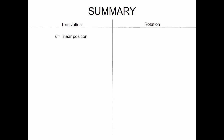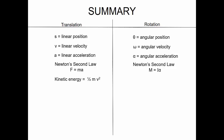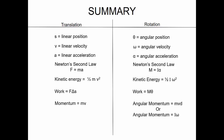In summary, for translation: S is linear position, V is linear velocity, a is linear acceleration. For rotation: theta is angular position, omega is angular velocity, alpha is angular acceleration. From Newton's second law: force equals mass times acceleration; for rotation, moment equals mass moment of inertia times angular acceleration. Kinetic energy: one-half mass times velocity squared; for rotation, one-half mass moment of inertia times angular velocity squared. Work: force times change in position (translation), moment times angle (rotation). Momentum: mass times velocity (translation); mass times velocity times distance, or mass moment of inertia times angular velocity (rotation). Impulse: force times change in time; angular impulse: moment times change in time.